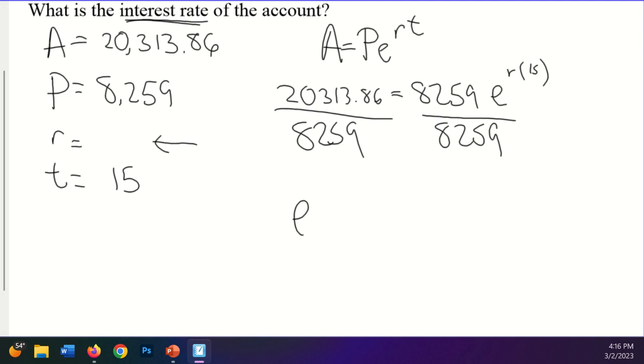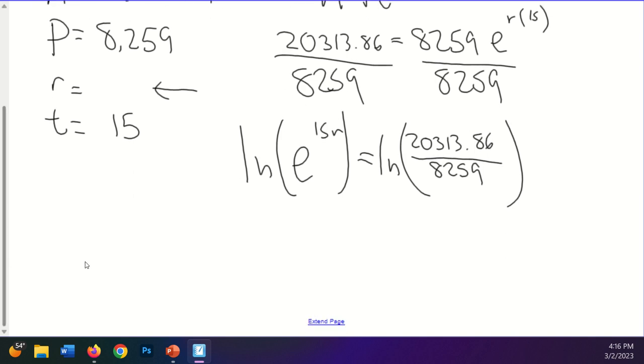And that will give me E to the 15R is equal to, and I'm only going to go to decimals once. So for right now I'm going to rewrite that 20,313.86 over 8,259. And what I'm going to do is I'm going to take the LN of both of those sides. And this one's a little bit different than the other one, because I had the LN of one over the LN of the other. This one I'm going to divide first. And so again, that property of exponents allows me to bring that down in front. So I have 15R, LN of E equals to the LN of 20,313.86 all over 8,259.